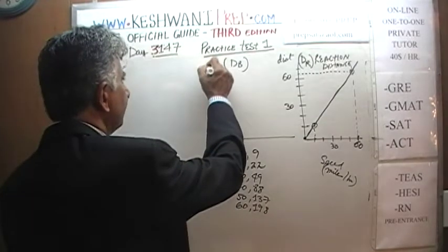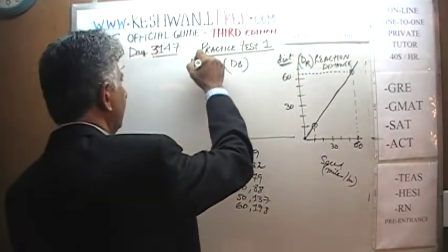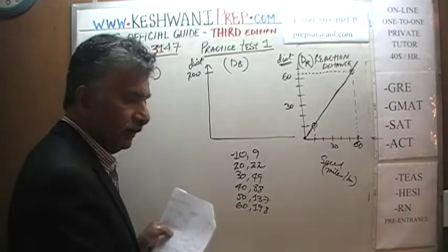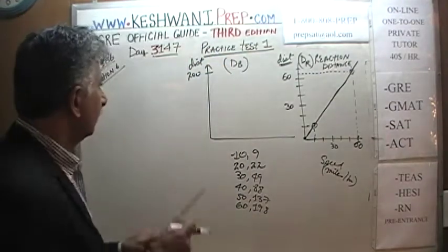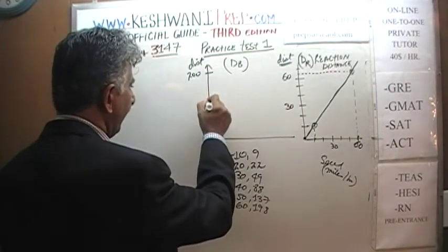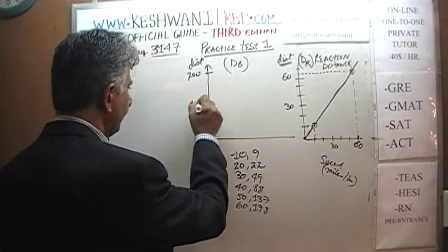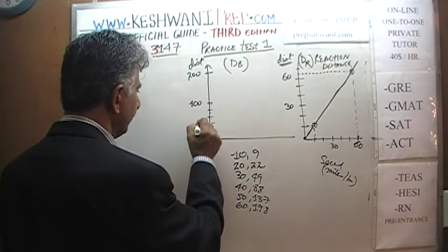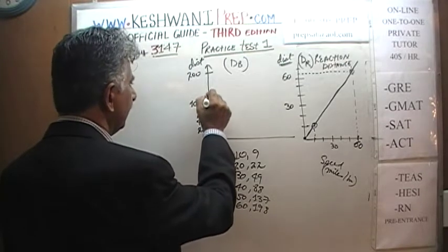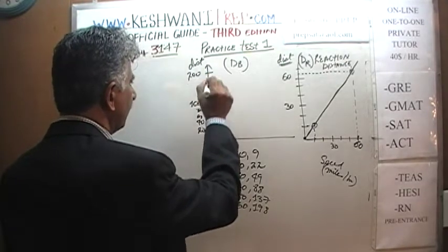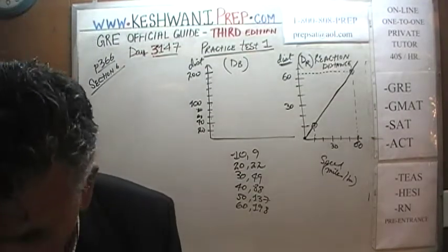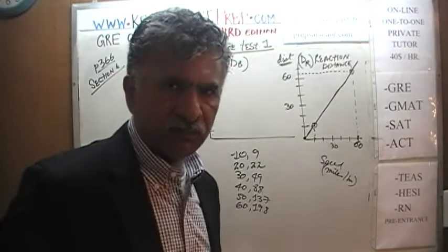On this graph the y-axis measures distance in feet and goes all the way up to about 200 feet. We will set up the axis in increments of 20: 20, 40, 60, 80, 100, 120, 140, 160, 180, 200. The x-axis shows speed up to 60 miles per hour with markings at 10, 20, 30, 40, 50, 60. We are going to plot the six coordinate points.